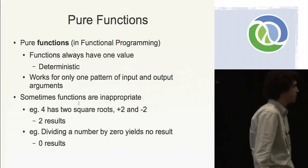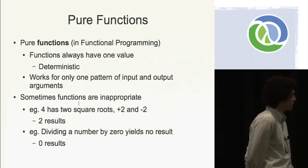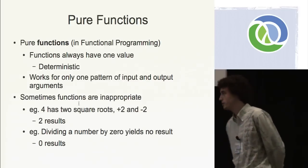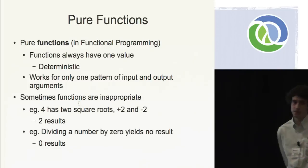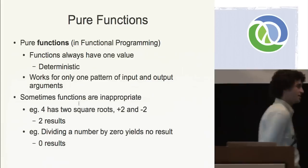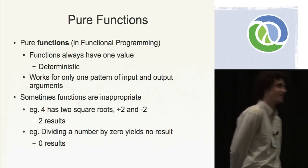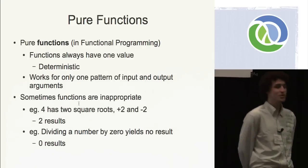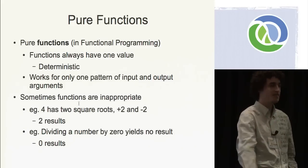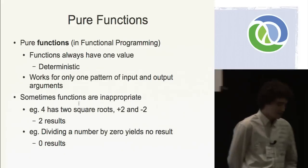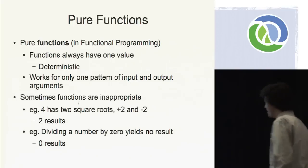In functional programming, we have our pure functions. Some pretty obvious things, but they're worth pointing out. Functions always have one value — they're what we call deterministic. We always get one value for our input arguments. And another fairly obvious thing is that functions only work for one pattern of input and output arguments. The inputs are the arguments or parameters, and the output is the return value. Functions seem like they can do everything, but sometimes they're inappropriate.